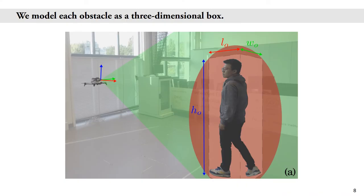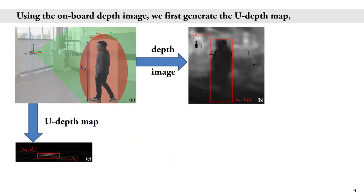In particular, we model each obstacle as a three-dimensional box. Using the MAV onboard camera depth image, we first generate the U-depth map, which is computed with the column depth value histograms of the original depth image.